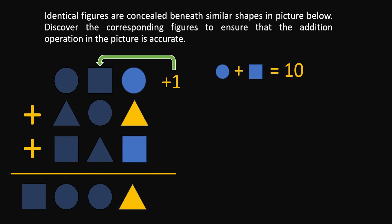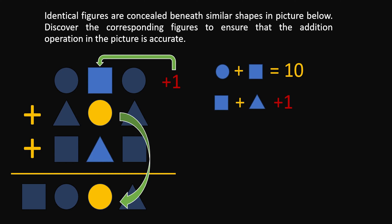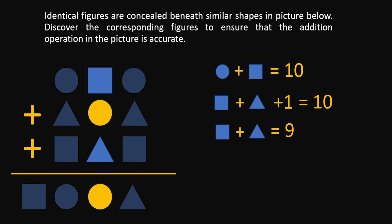Now let's take a look at column number 2. In column number 2 we have again a square, a circle, and a triangle, but this time the circle is the result, so the circle repeats itself. That means that square plus triangle plus 1 — because we carry plus 1 from our previous column — must equal 10. This means that square plus triangle must equal 9, and this is our second condition.